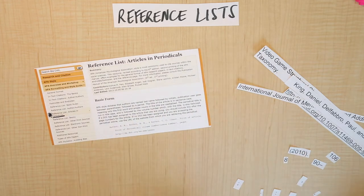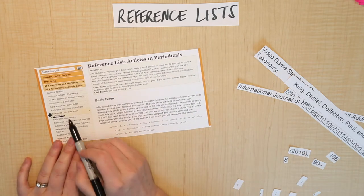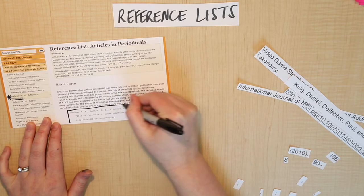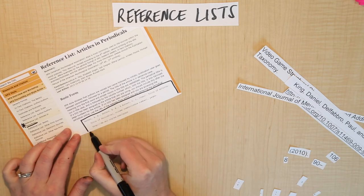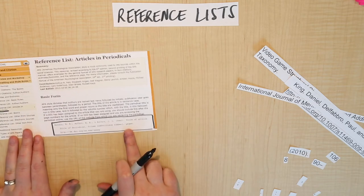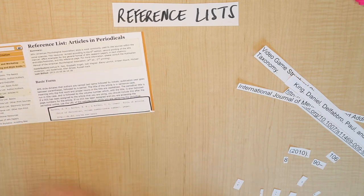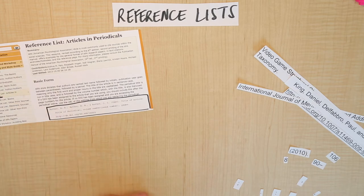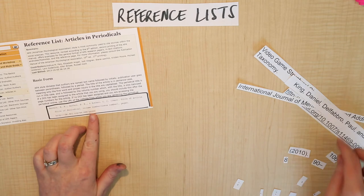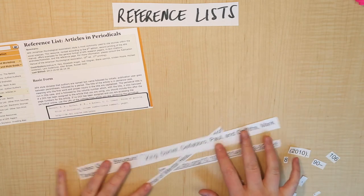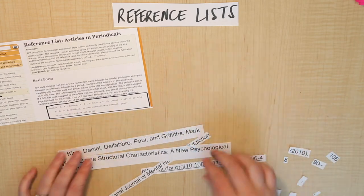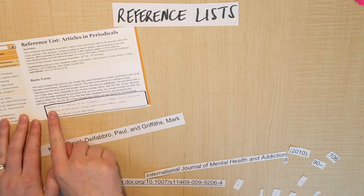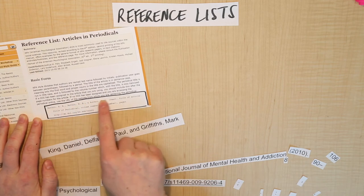Once you go to that section, you'll come to the part that tells you the exact format you need to follow when entering papers into your reference list. You want to follow that exactly — including the capitalization, the italics, and the punctuation. I took one of the references we looked at last time, and here are all the pieces. I'm going to try to put it together.